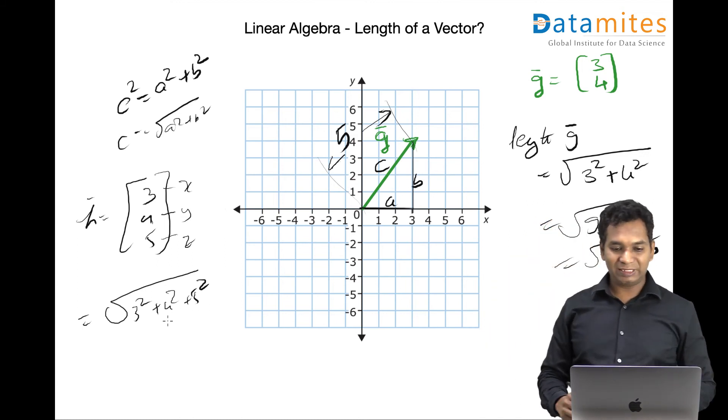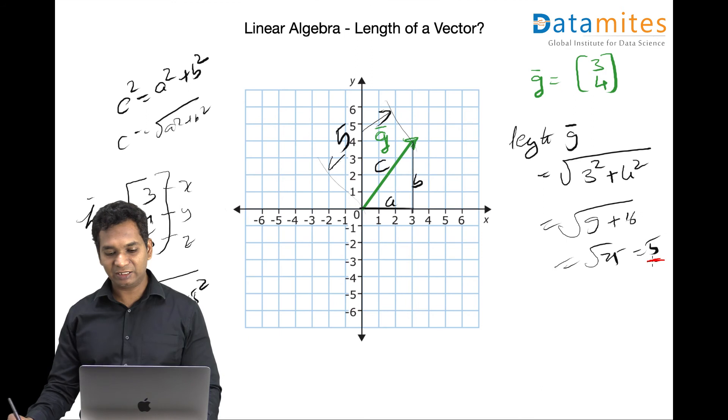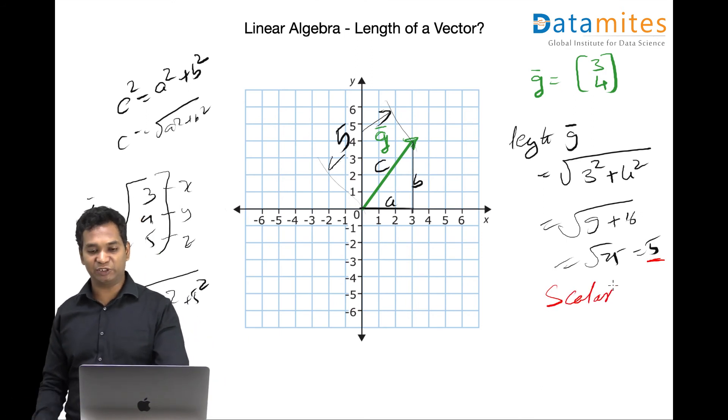Also note, the length of this vector is actually a scalar. The 5 here is a scalar. Because we are talking about a length, so it doesn't have any direction. The length of a vector is scalar and can be easily found by using the given theorem.